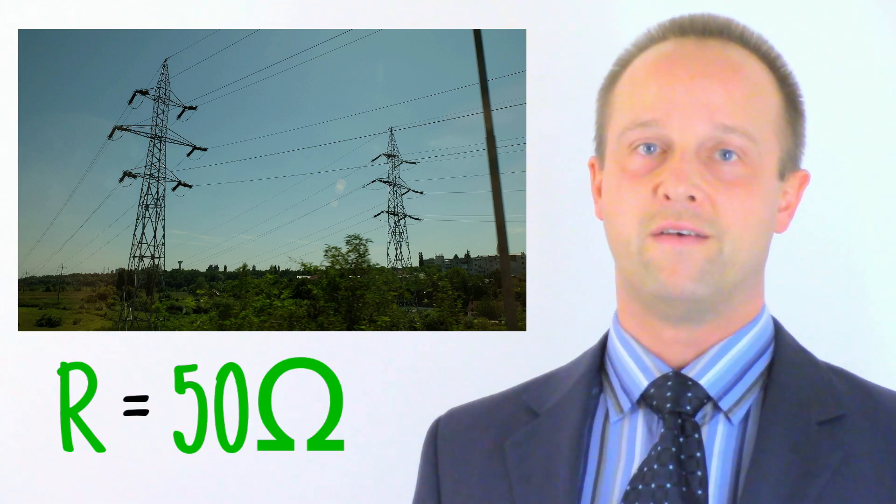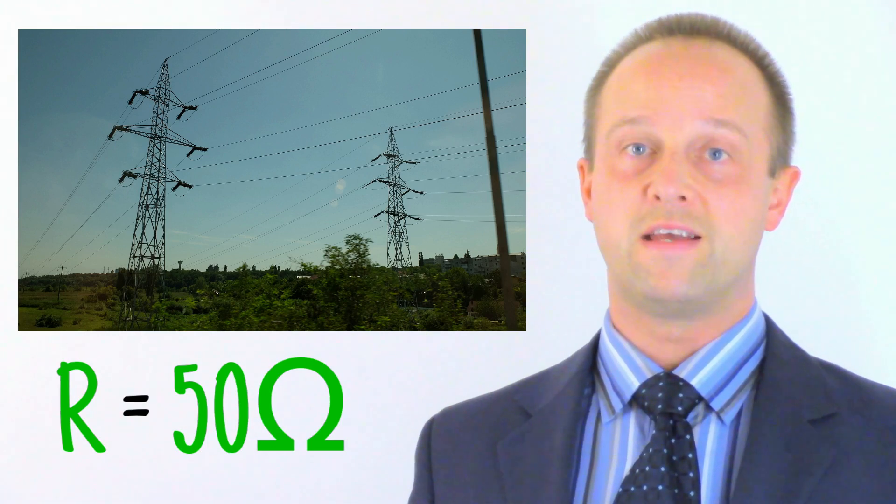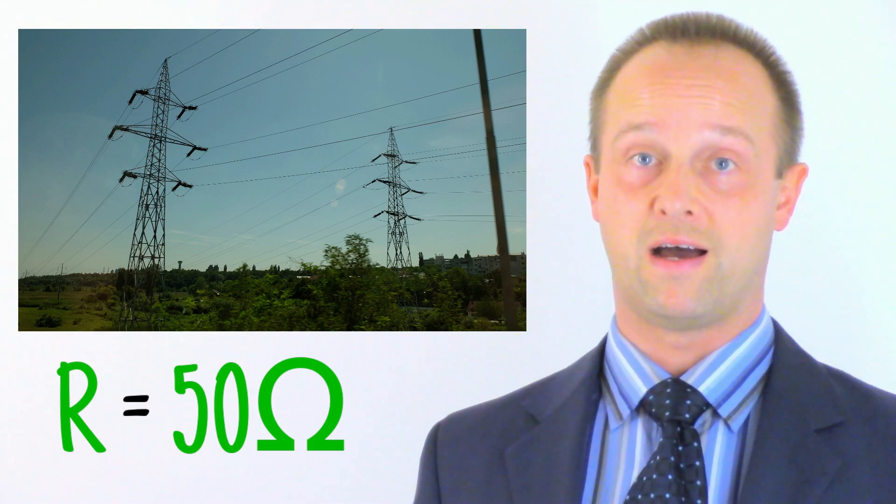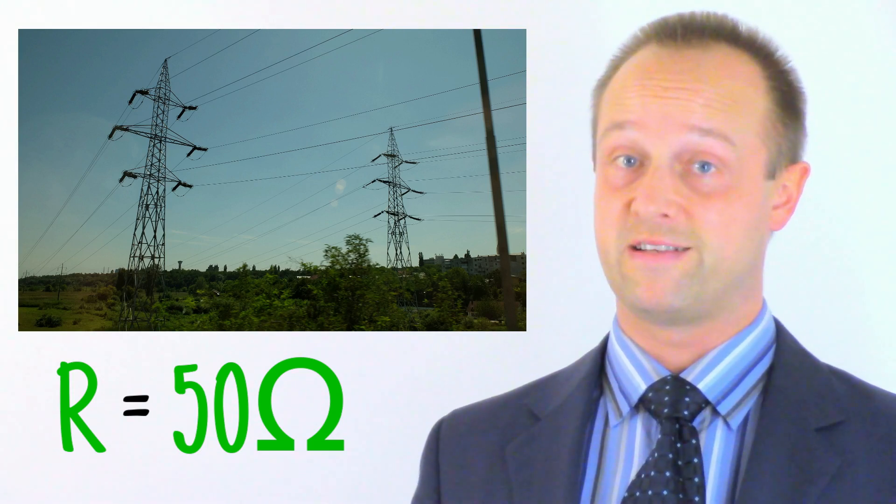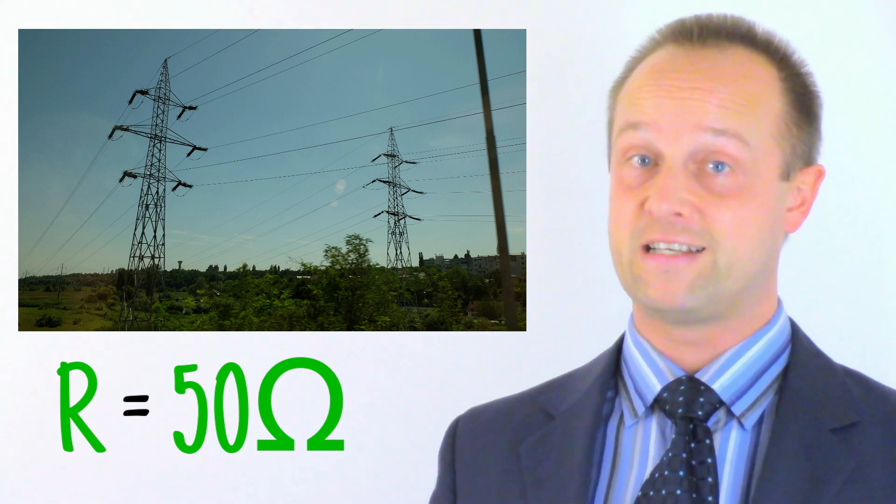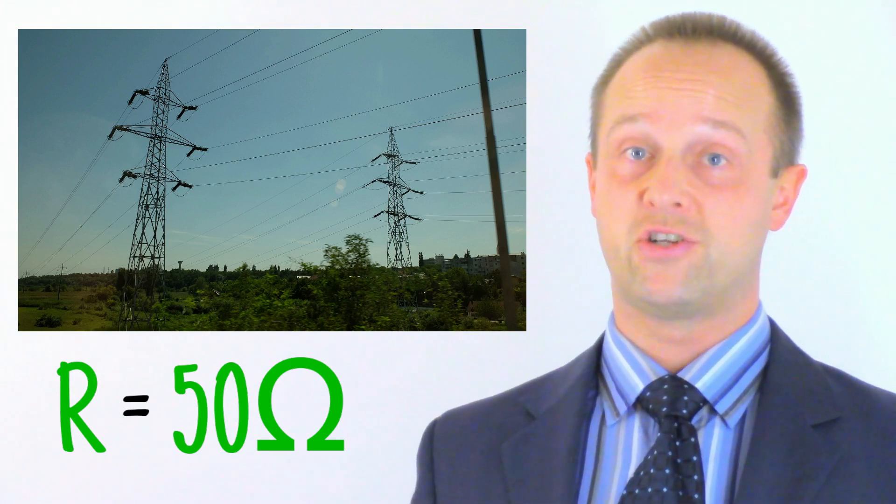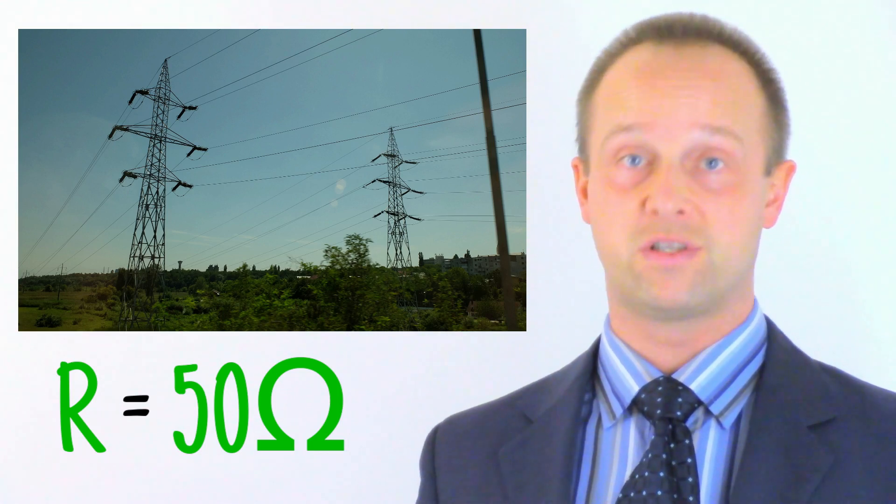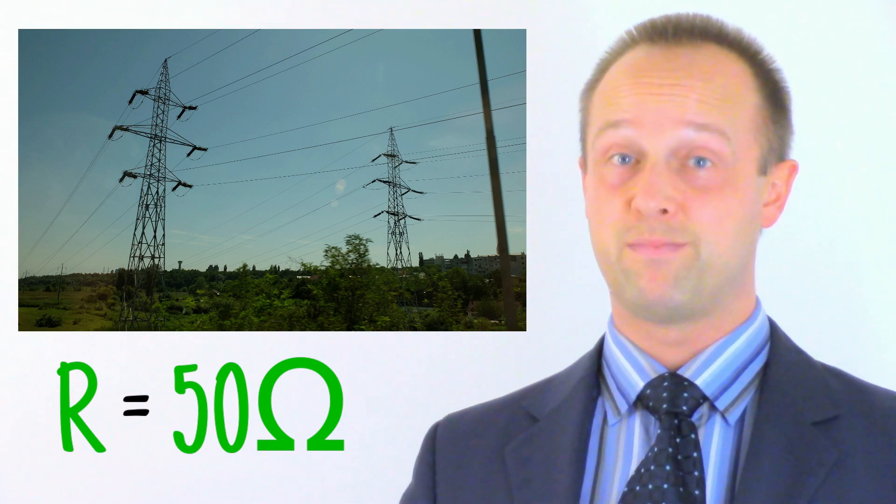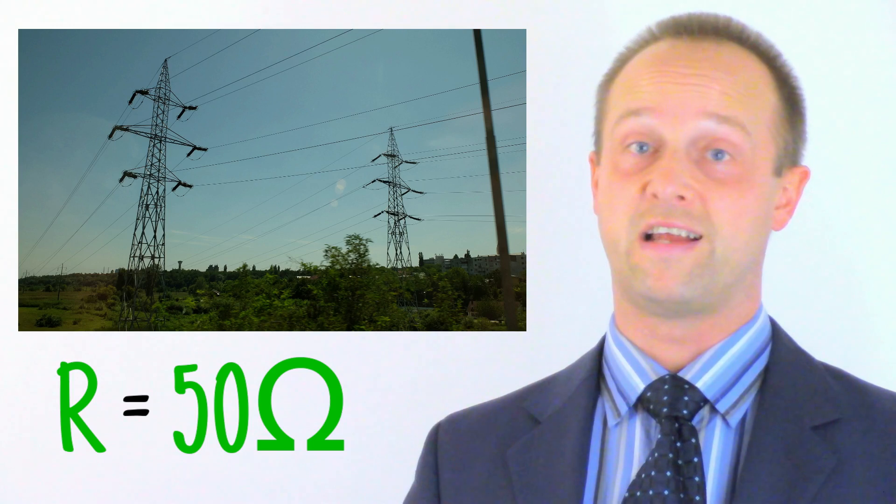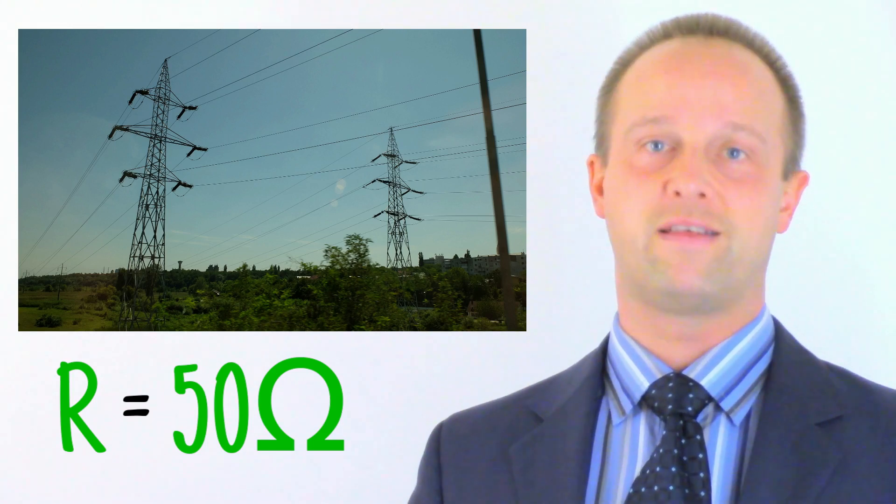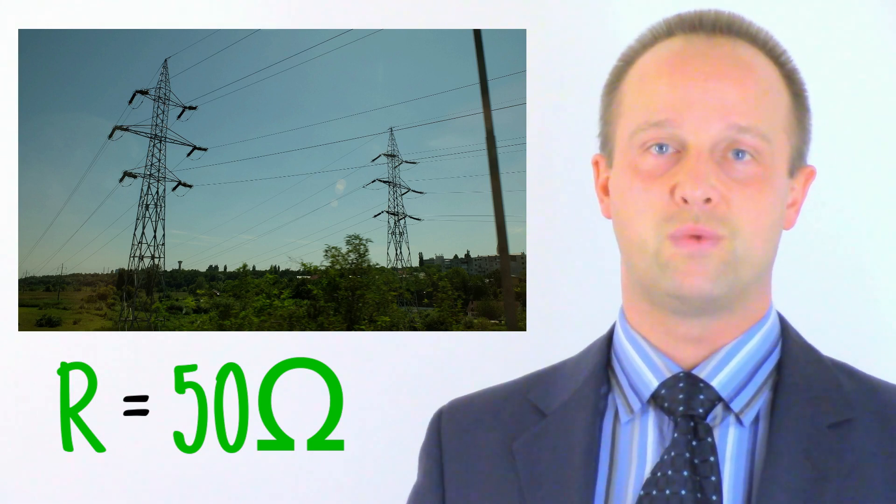The only practical ways that you can change that resistance are by making the power line out of a better conductor, which would be more expensive, making it with a greater diameter, which will be more expensive and heavier, or making it shorter, which would require your power station to be closer to wherever you're sending the power. I should add at this point that I am oversimplifying the resistance of the power line somewhat, just in case there's any national grid engineers watching this. So essentially we can't do anything about the resistance of the line, at least nothing which is really practical.